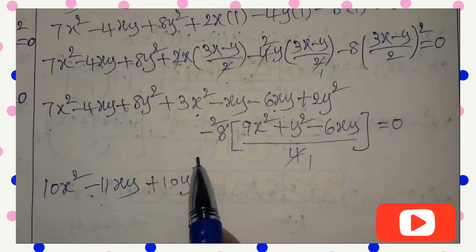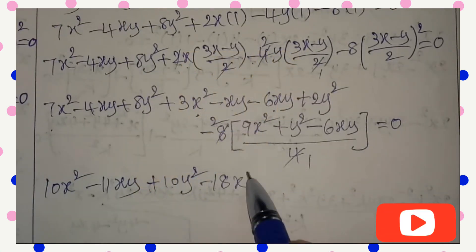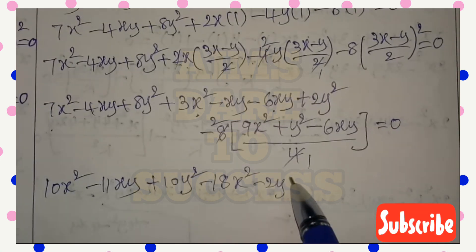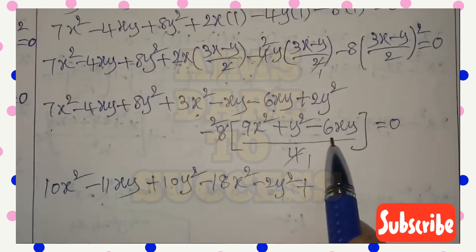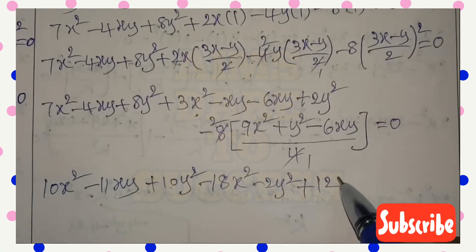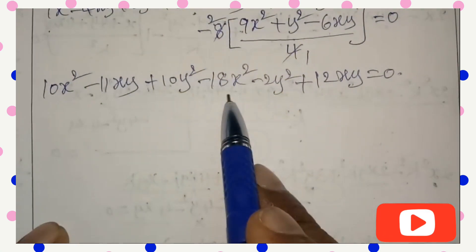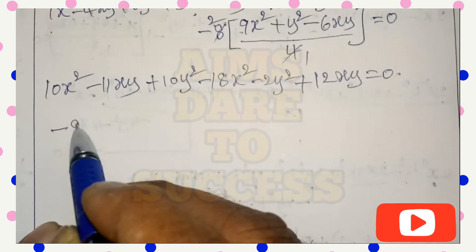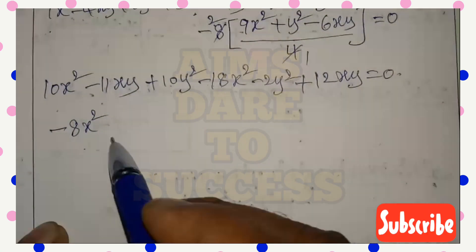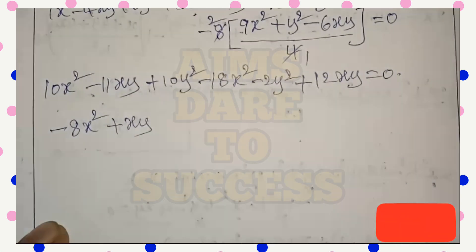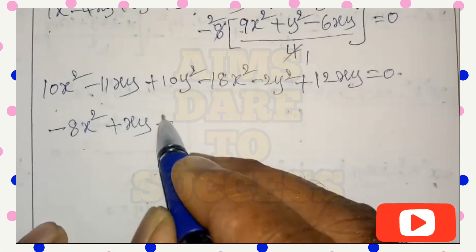After that, -2 multiply inside. We get -2(9) = -18x². Next -2y². Minus into minus plus 12xy = 0. Now you can take x² terms, y² terms, xy terms separately. 10x² - 18x² = -8x². Next 12xy - 11xy = +xy. After that 10y² - 2y² = 8y² = 0.